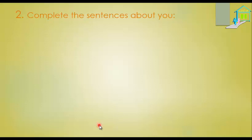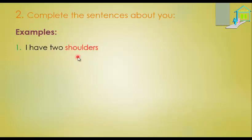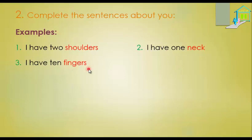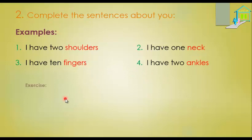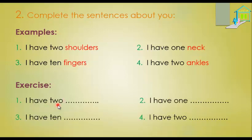We have another exercise here. You have to complete the sentences about yourself. For example: Number one — I have two shoulders. Number two — I have one neck. Number three — I have ten fingers. Number four — I have two ankles. These are my examples. Now here is the exercise you will complete: I have two [body part], I have one [body part], I have ten [body part], I have two [body part]. Please do the exercise — you have it in your workbook.